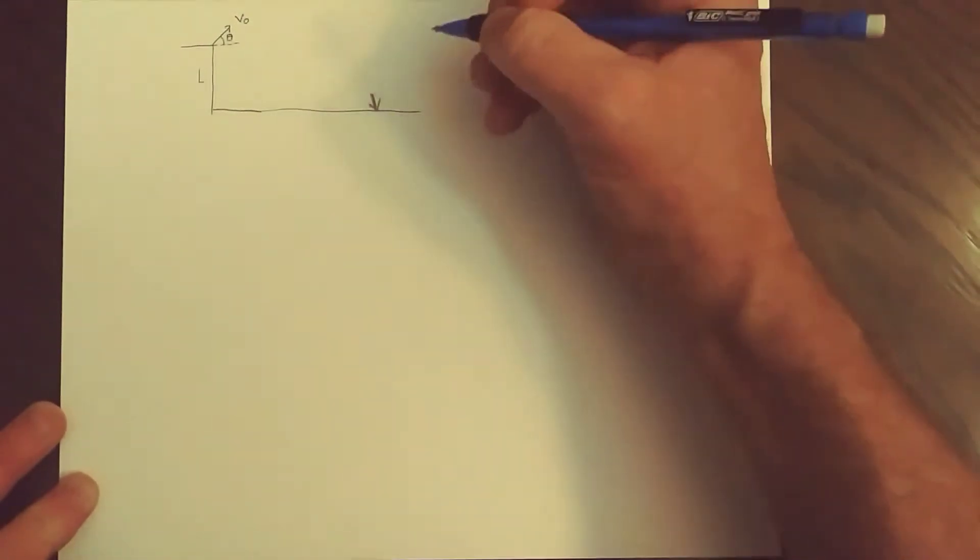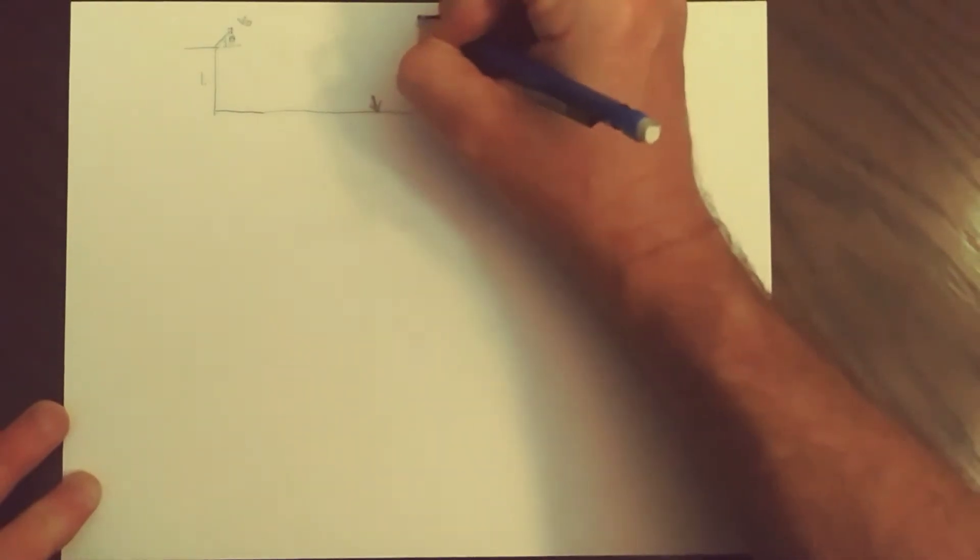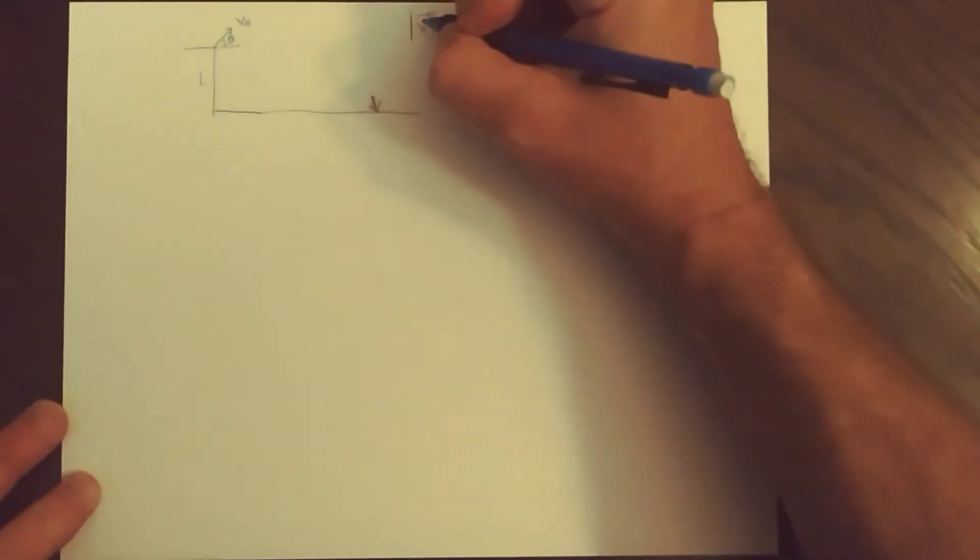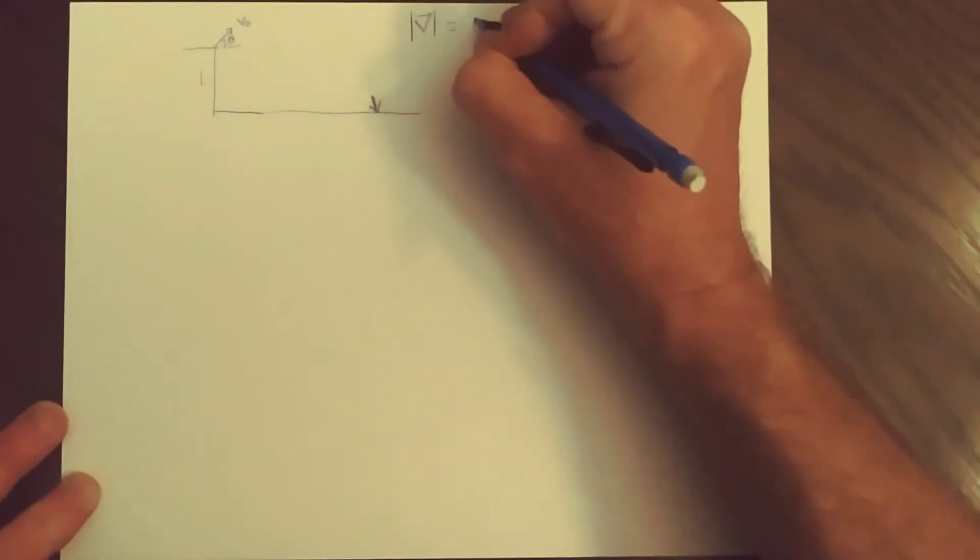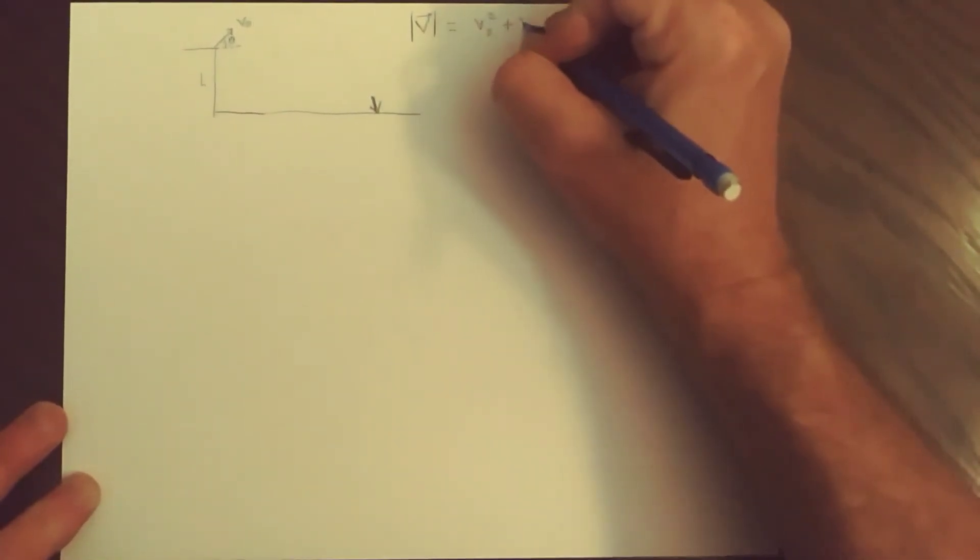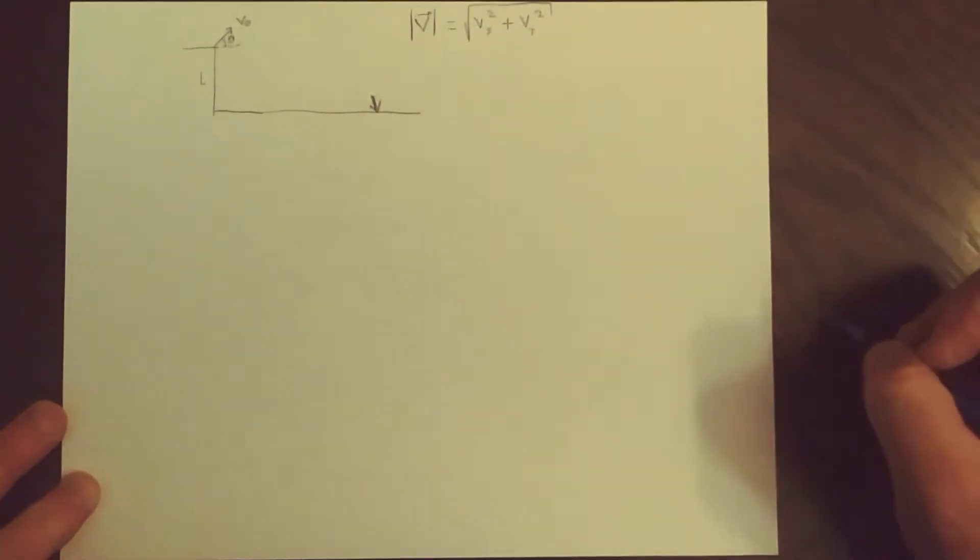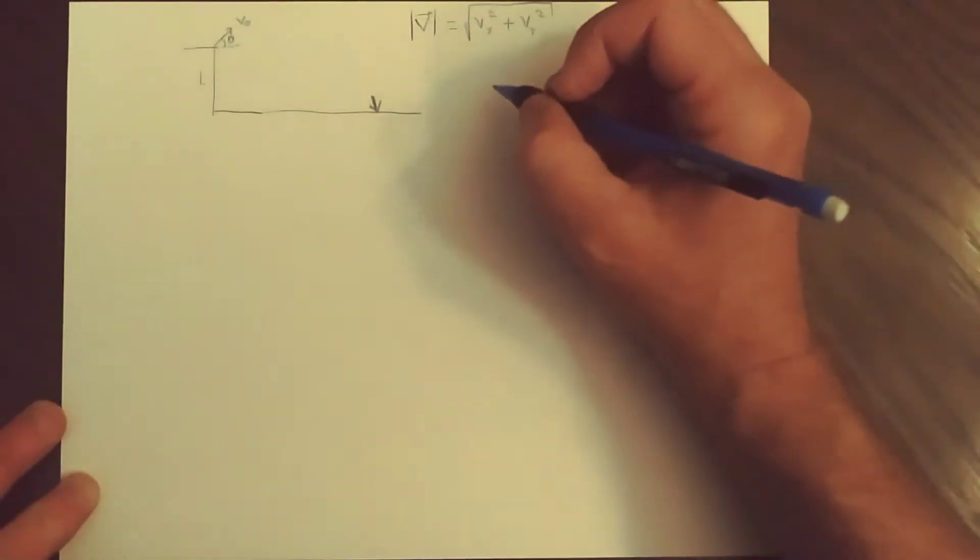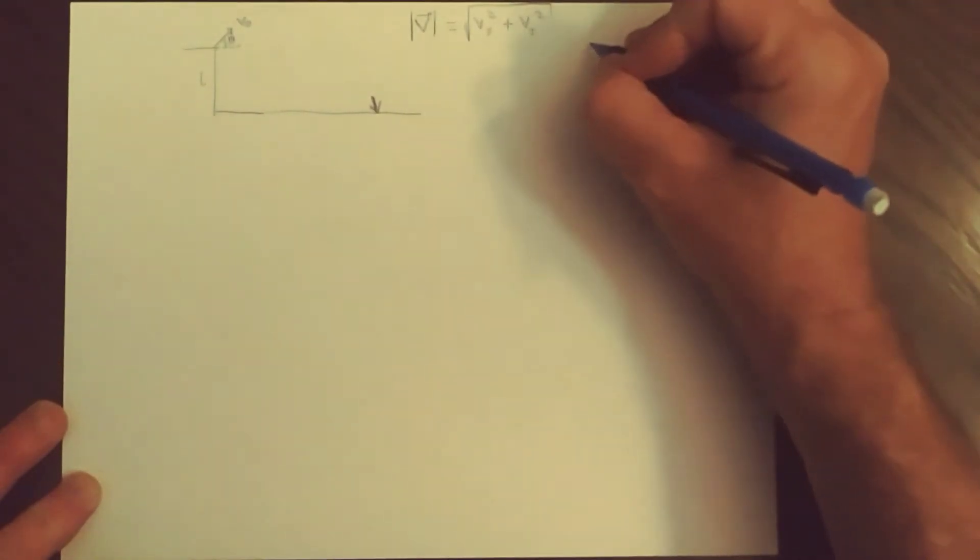So is it the velocity, the magnitude of the velocity? The first thing to notice is that the magnitude of the velocity or the speed is the X component squared plus the Y component squared, square root. So these are the quantities we're looking for.